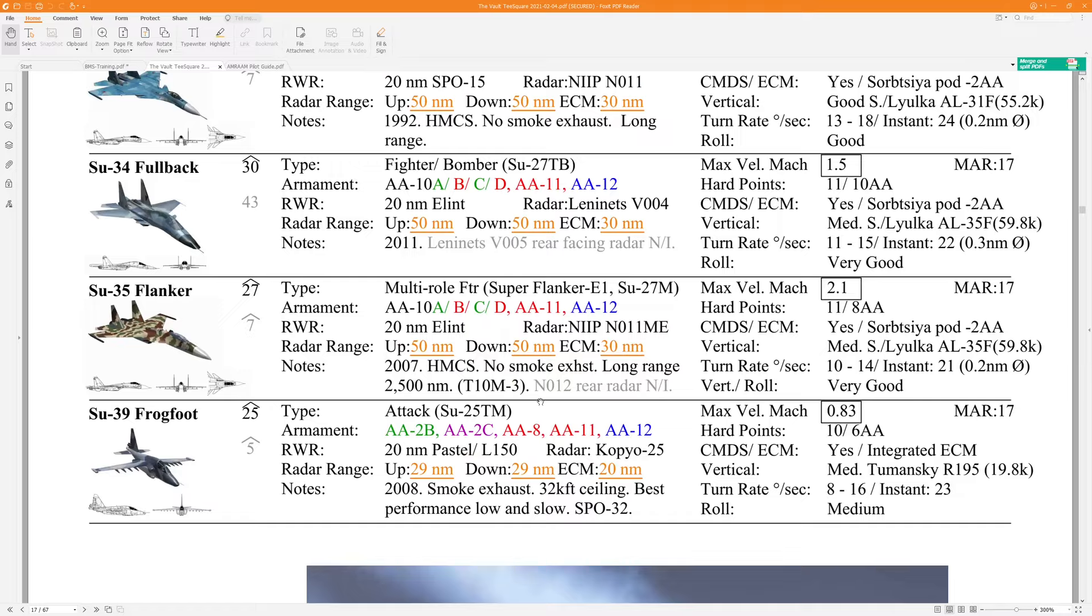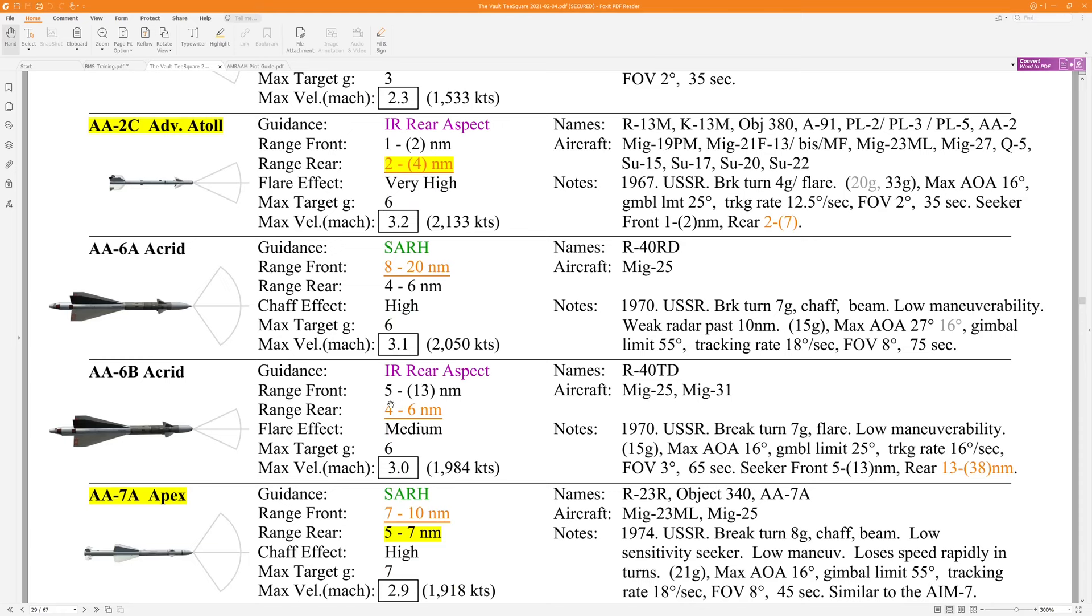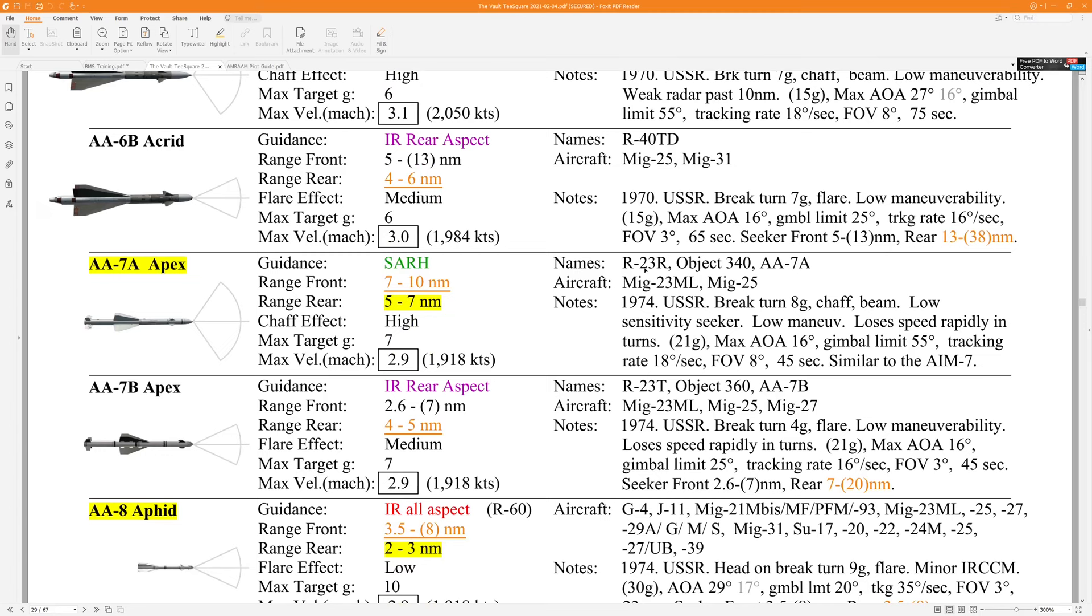So all the way down in the Red Force missiles. So we've got several infrared rear aspect missiles. Pretty small engagement zones here, 1 to 2 miles. In the front range rear is obviously slightly bigger because they're able to track the exhaust of the jet there. Let's look at the semi-active radar homing missiles. So these R-23Rs might be carried by the MiG-23s. And we can see that their frontal range is maximum about 10 miles. Their rear range, which factors into that WEZ-TA, is 5 to 7 nautical miles.